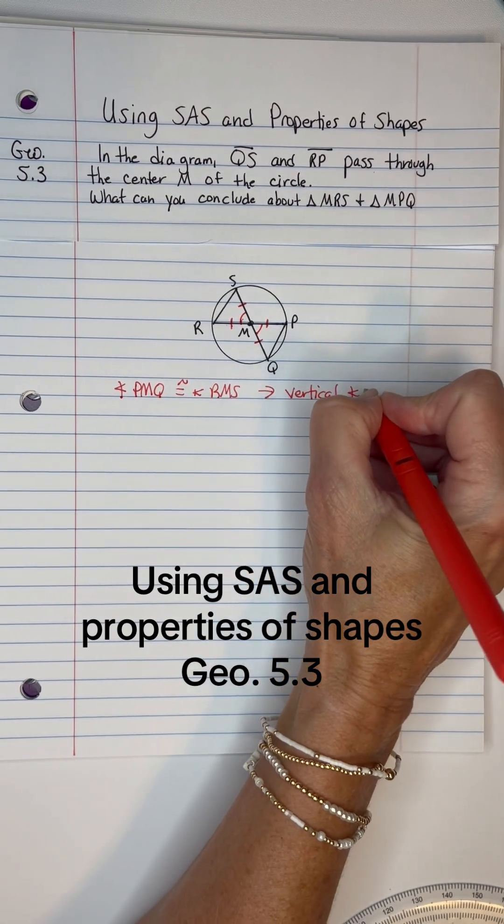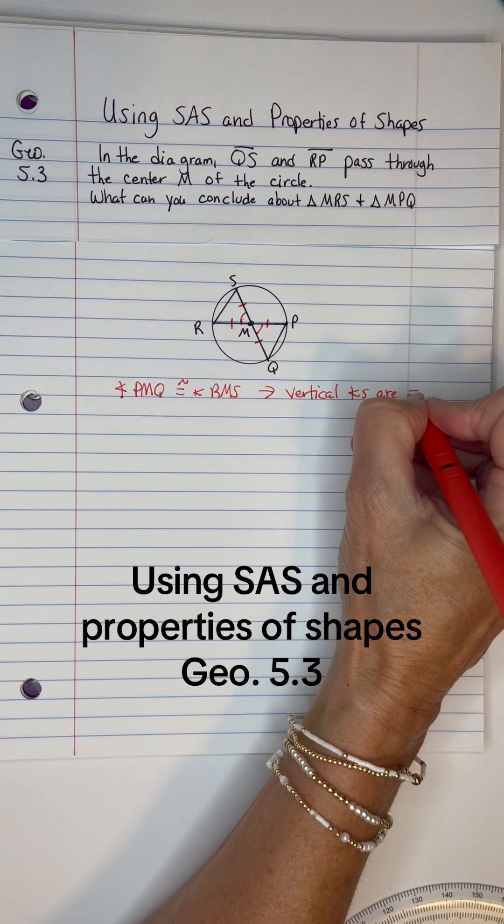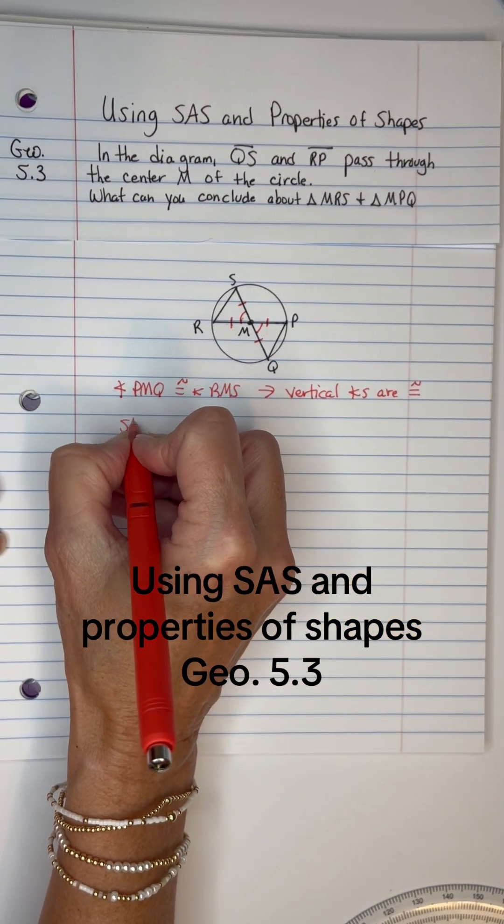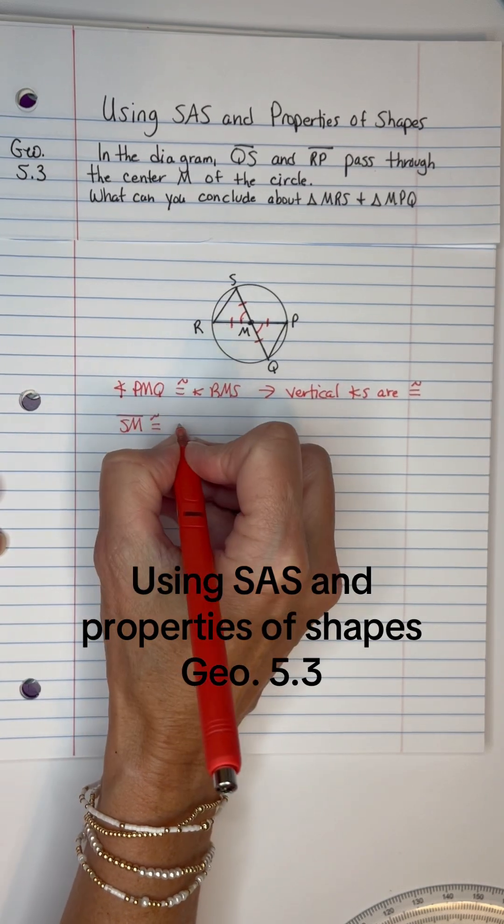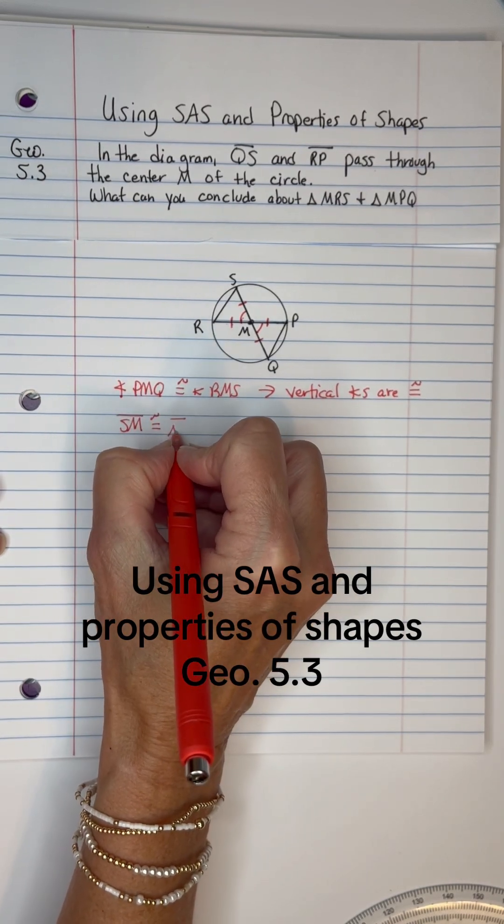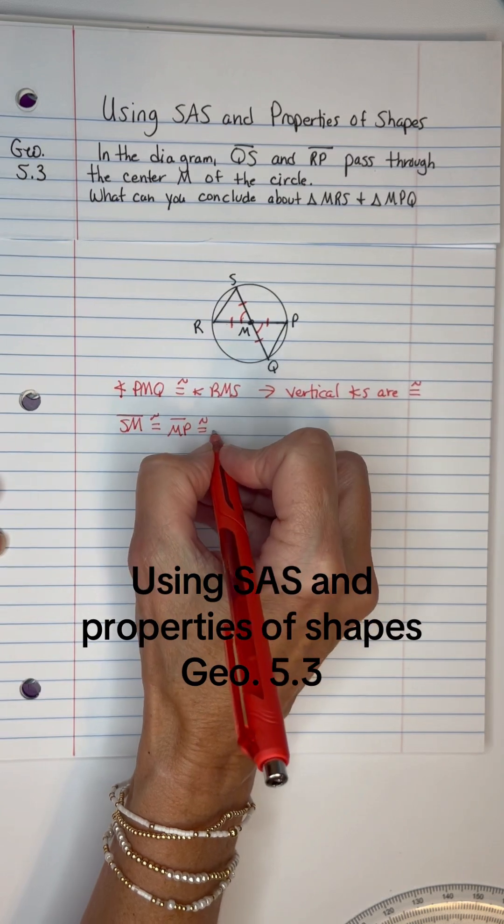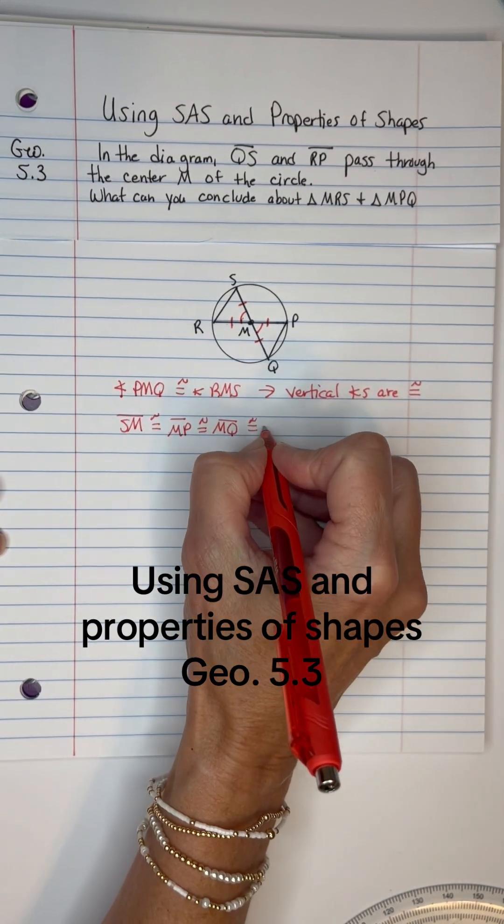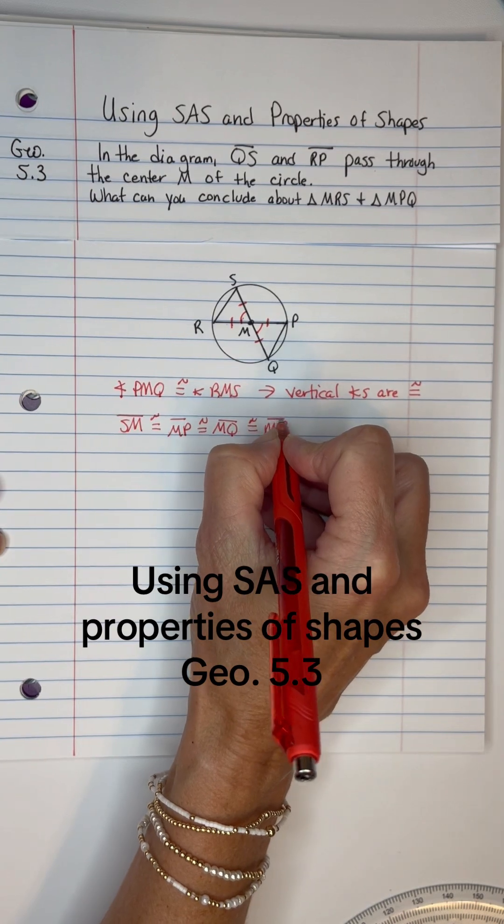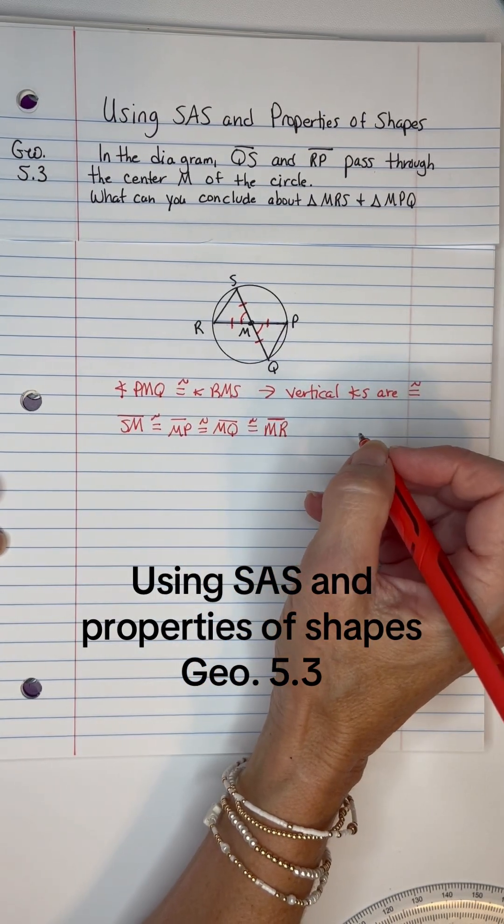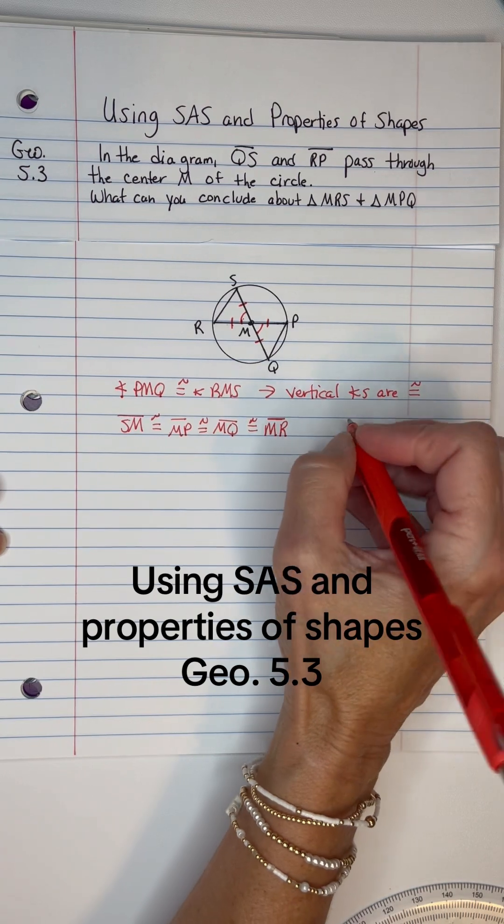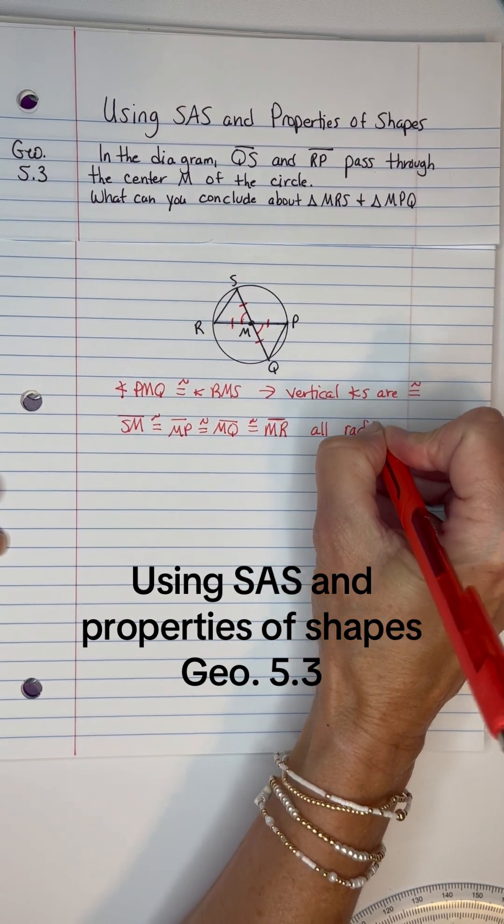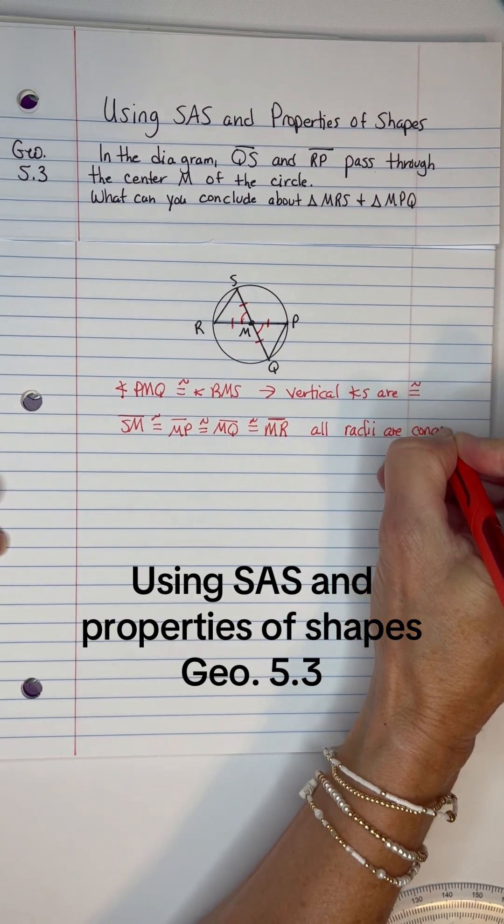And then let's state that segment SM is congruent to segment MP which is congruent to segment MQ which is congruent to segment MR. And the reason is that all the radii are congruent. All radii are congruent.